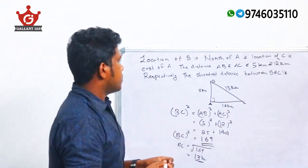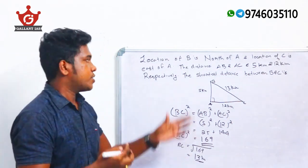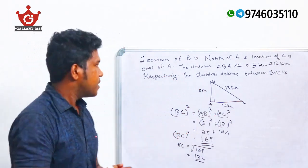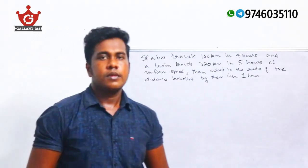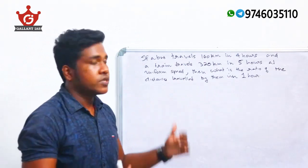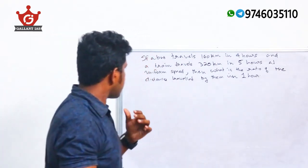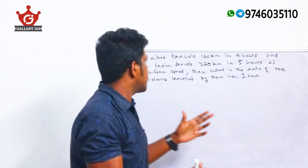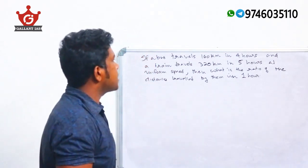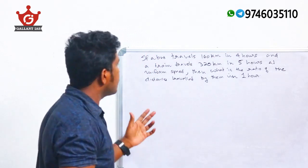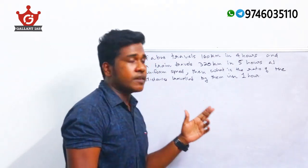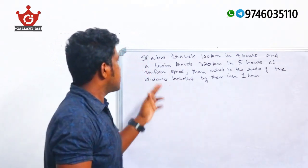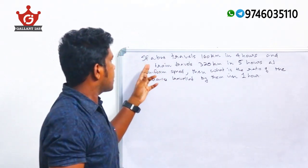The shortest distance between B and C is 13 kilometers — check your answer. Next question: A bus travels 160 km in 4 hours and a train travels 320 km in 5 hours at uniform speed. What is the ratio of the distance traveled by each in 1 hour?